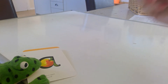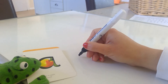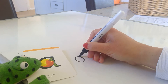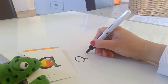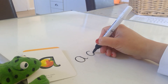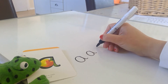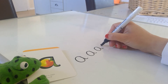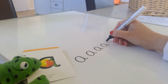Now we're going to do an A, A for apple. Around the apple and down the leaf. Around the apple, down the leaf. A.